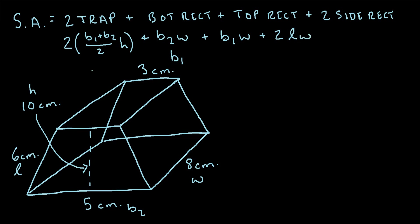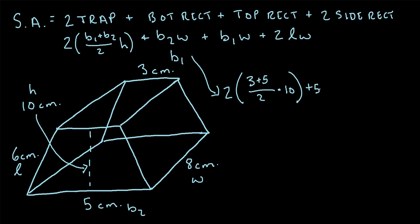This is the formula we can use to find the surface area. Now let's plug in all the values. We have: two times (base one plus base two) divided by two times the height — so two times (3 plus 5) divided by two times 10. Plus b2 times w: five times eight. Plus b1 times w: three times eight. And lastly two times l times w: two times six times eight.